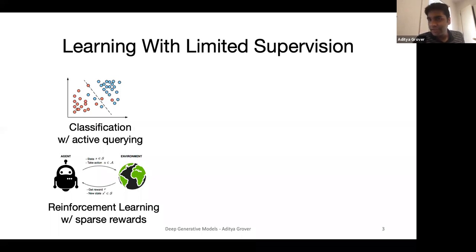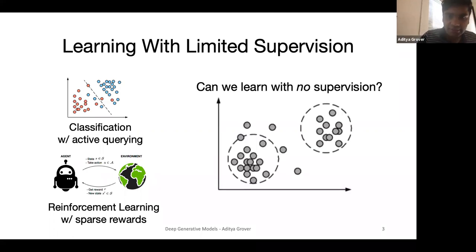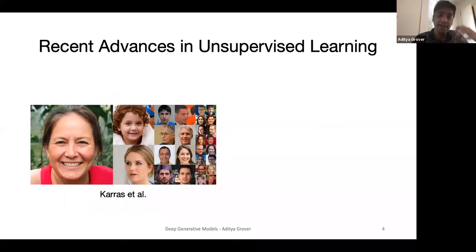There are many ways in machine learning to reduce the supervision requirements. For instance, in classification, we can actively query for labels of points close to the decision boundary between two classes. In reinforcement learning, we often have access to only very sparse rewards, so we can try to shape the rewards to provide additional proxy signals for learning. In today's talk, my focus will be on the unsupervised setup, where we have no supervision signal for the downstream task. How can we learn with no supervision?